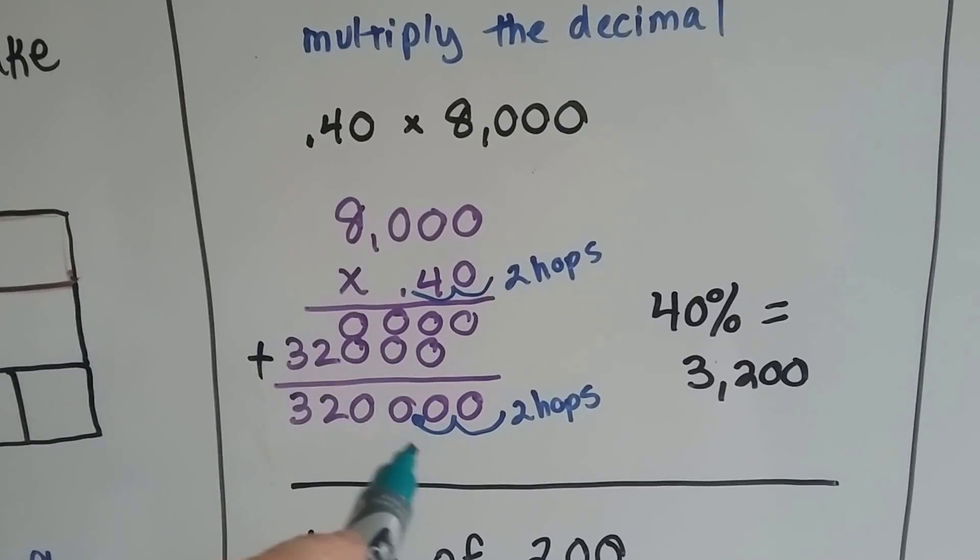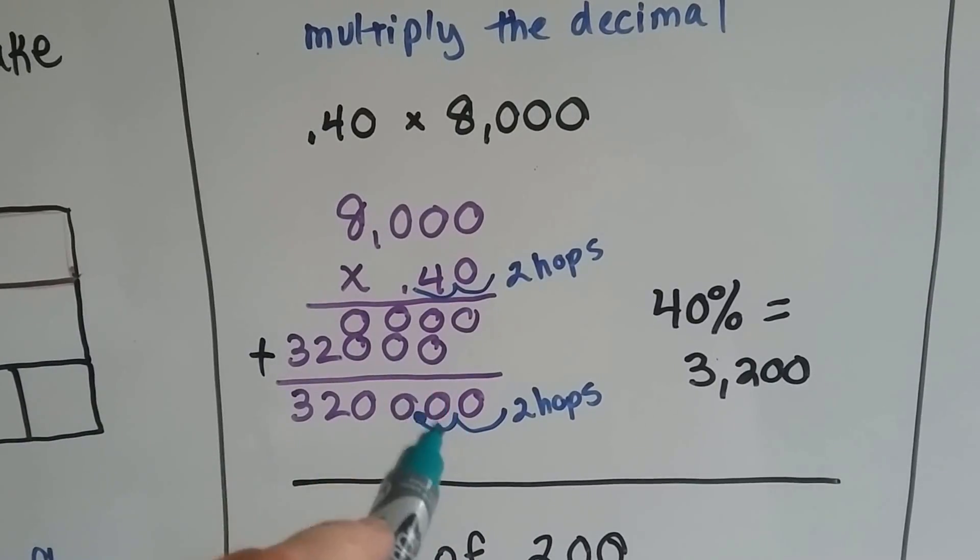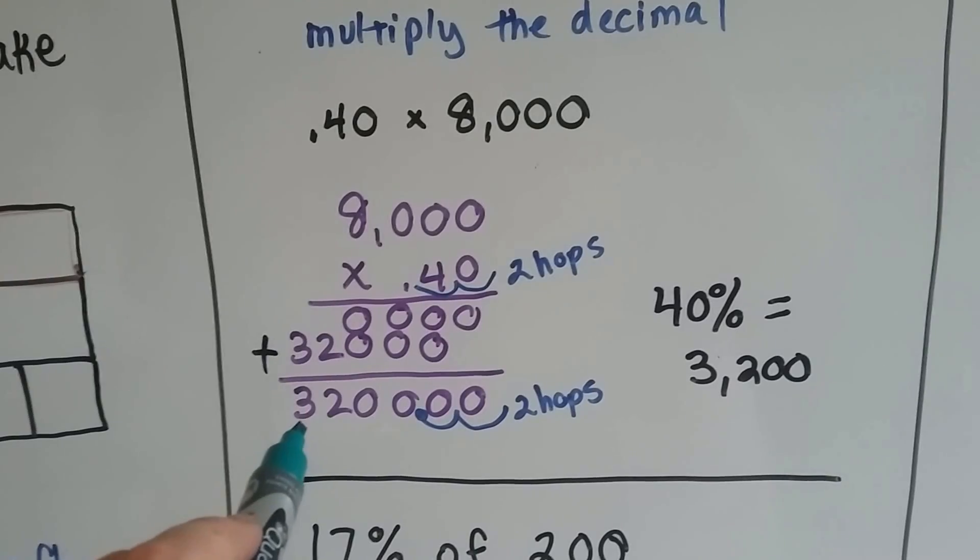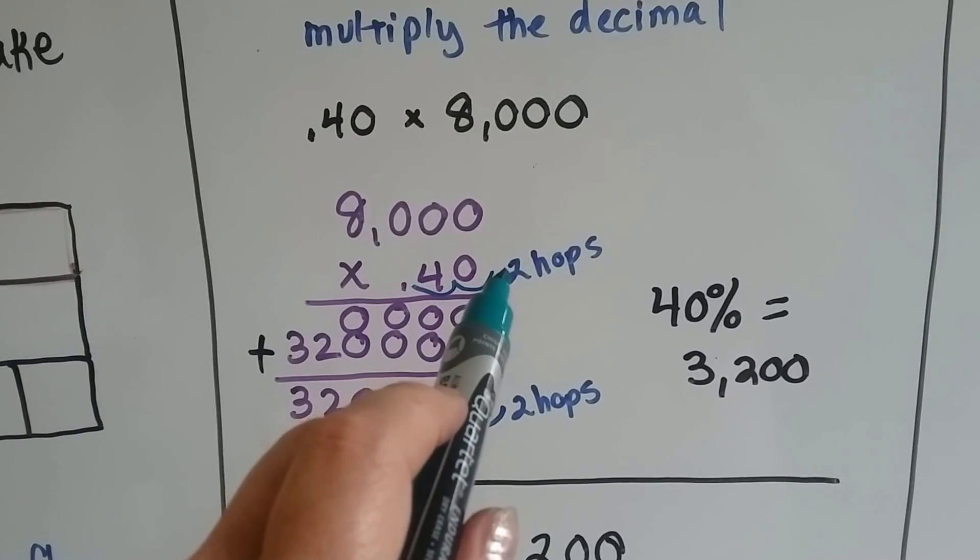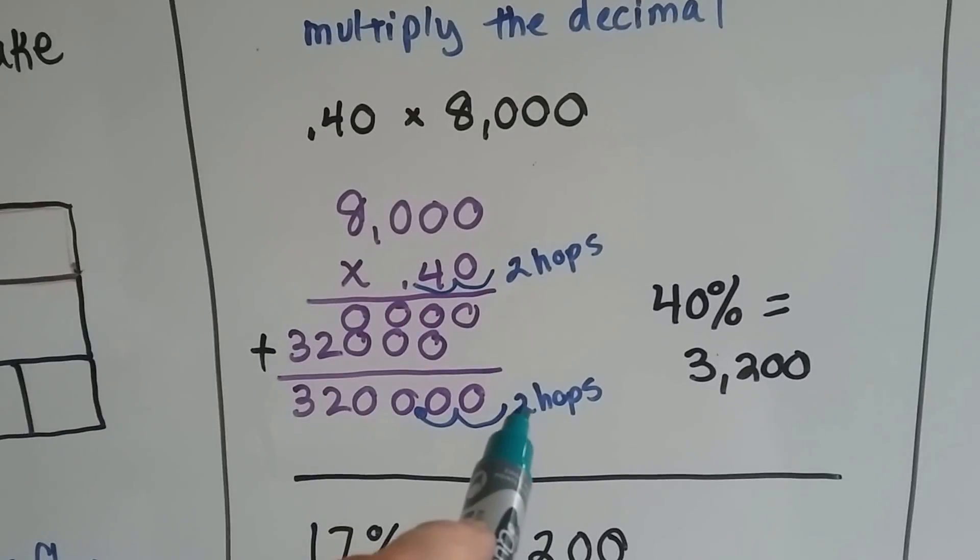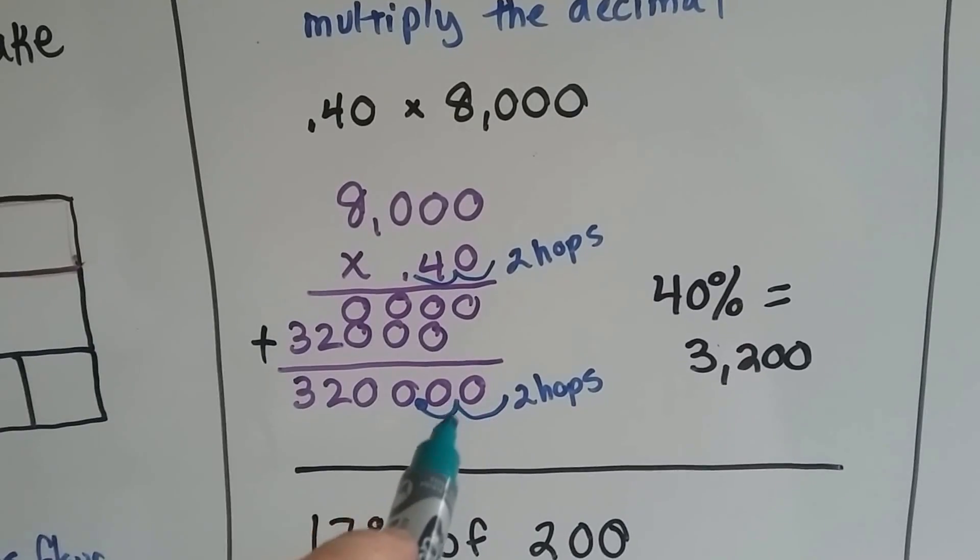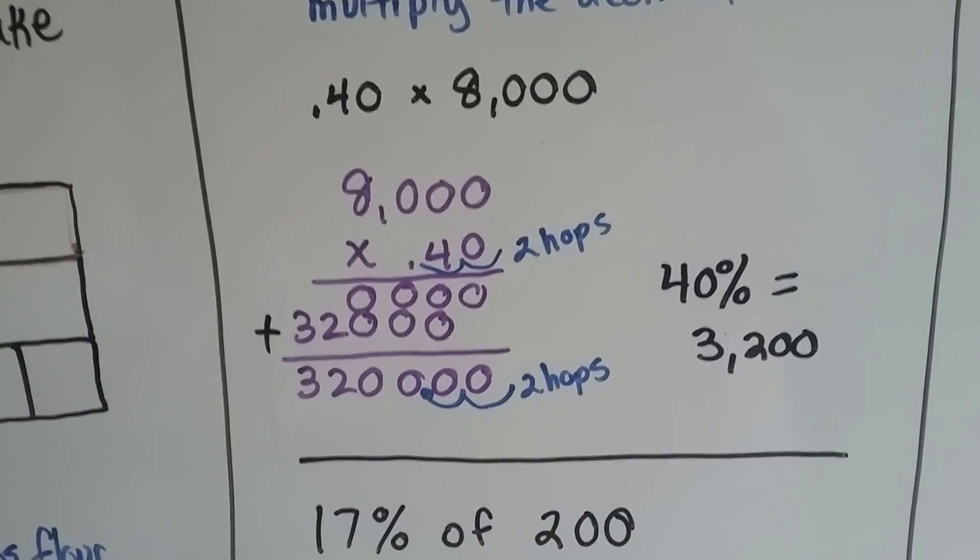We draw a line, we add them all up, and we have zero, zero, zero, zero, two, and three. We count the hops in the decimal equation. One, two. We put that many into the product. One, two. And we get 3,200.